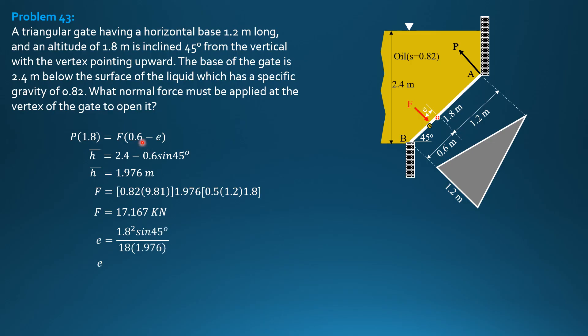So everything is known, substitute in our working equation. So P times 1.8 equals 17.167 times quantity 0.6 minus 0.06441. So P is equal to 5.108 kilonewtons.